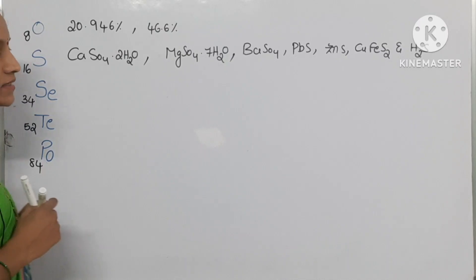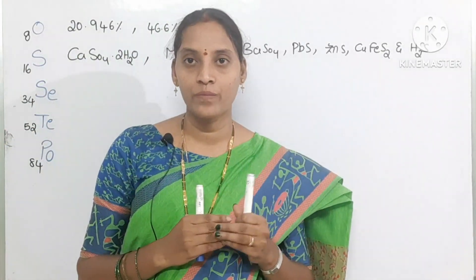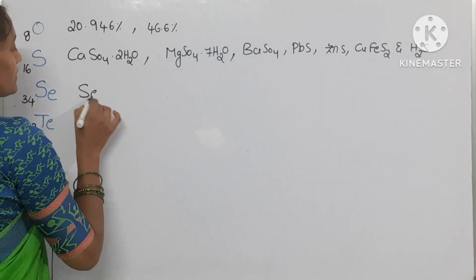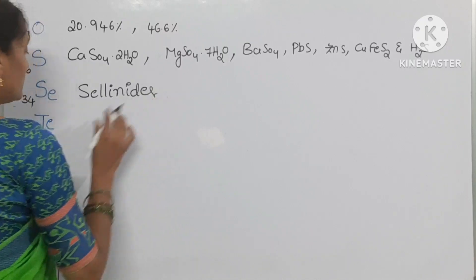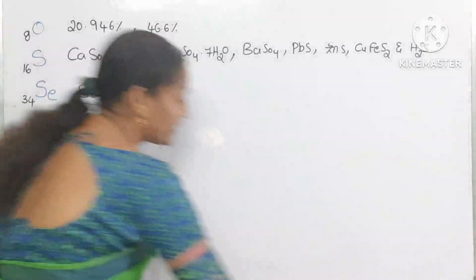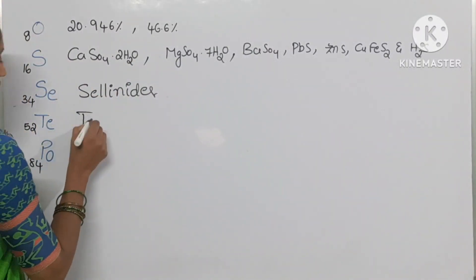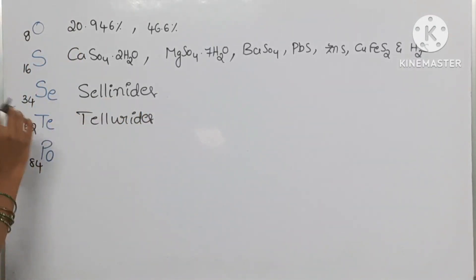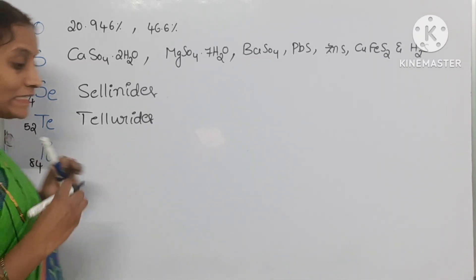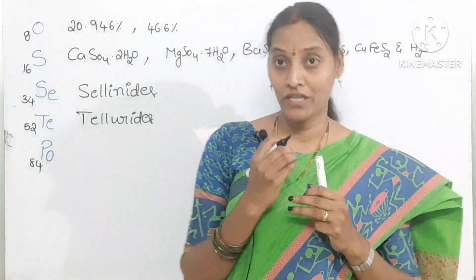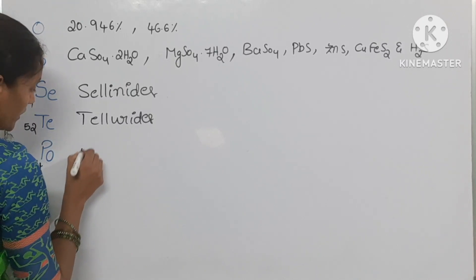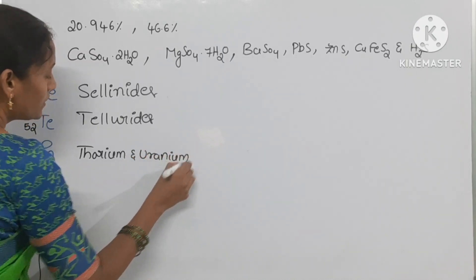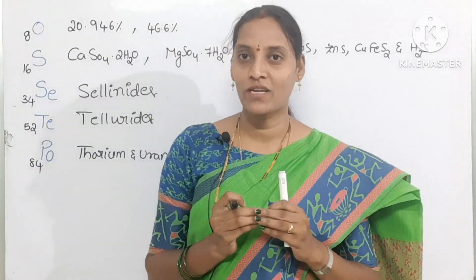Selenium and tellurium mainly come from mineral forms of selenides and tellurides respectively. Polonium comes from the decay of thorium and uranium, because these two are radioactive elements. Polonium is also a radioactive element and has a short half-life.